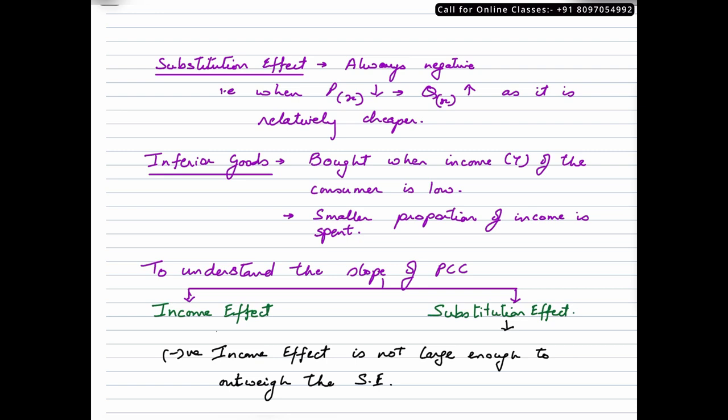Let us see what are the two things that we need to remember and understand while studying the slope of PCC curve for inferior goods. We need to remember the two effects: income effect and substitution effect. The negative income effect is not large enough to outweigh the substitution effect. Let us see what is a negative income effect first. Income effect could be considered negative when with an increase in income, a consumer reduces his quantity purchased. And generally the income effect is negative in case of inferior goods.